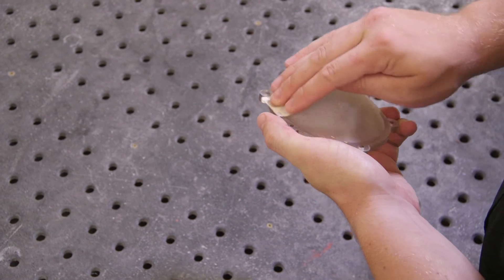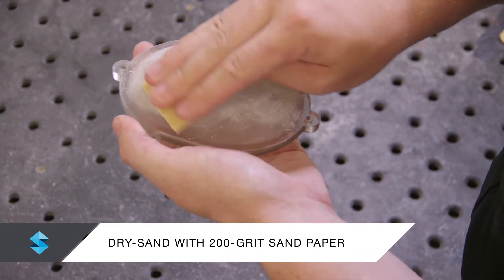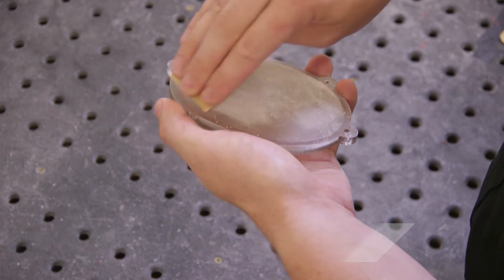To remove surface imperfections and unwanted layering, make sure that the model is completely dry and lightly sand all surfaces with 200 grit sandpaper.